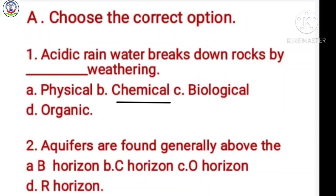Number 2: Aquifers are found generally above which option? A: B horizon, B: C horizon, C: O horizon, D: R horizon. Answer is D, R horizon.